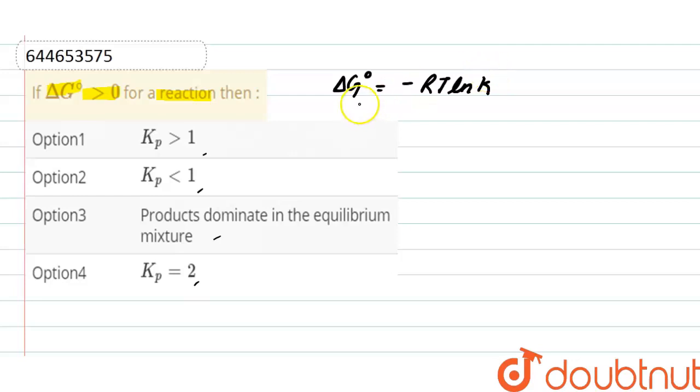the equilibrium constant. So for a reaction that has ΔG° positive, and for ΔG° to be positive, the value of ln K or we can say the value of K must be negative to make...